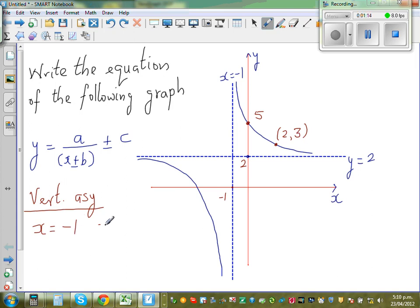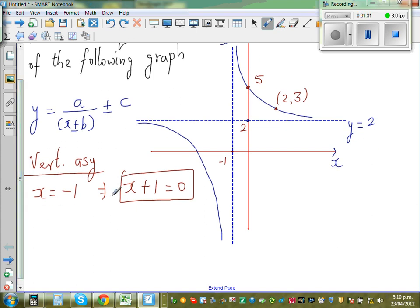Which implies, if you add 1 to both sides, this implies x plus 1 is equal to 0. So this tells me the equation is... I'll come to the equation later on. So let us leave that there itself.